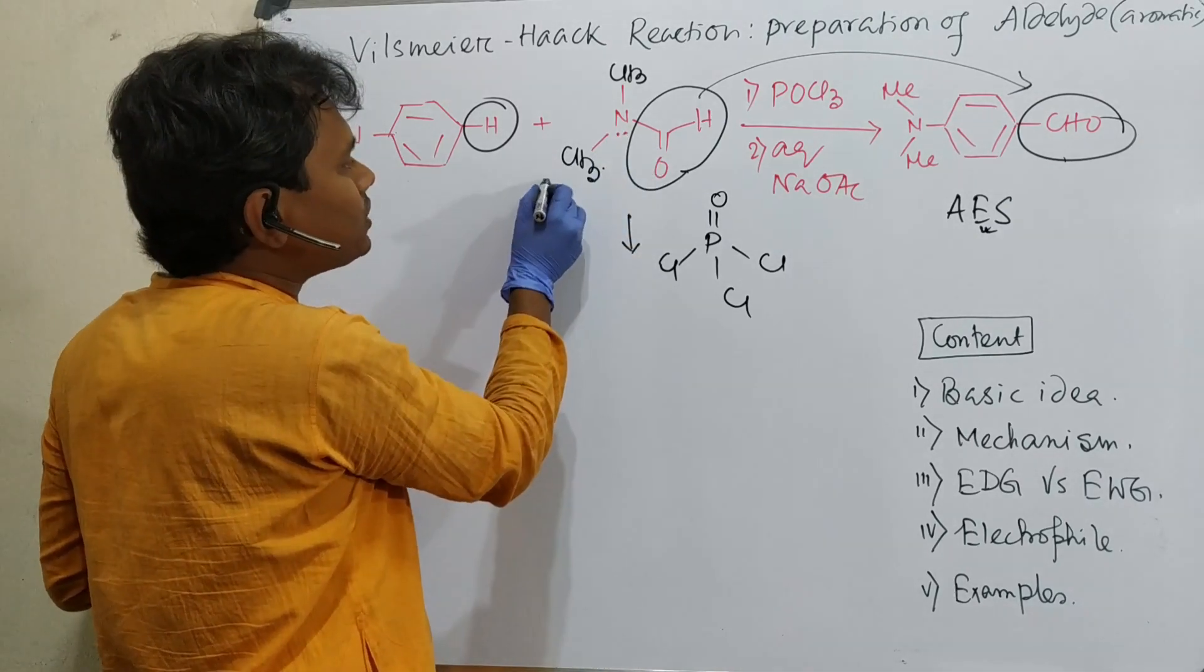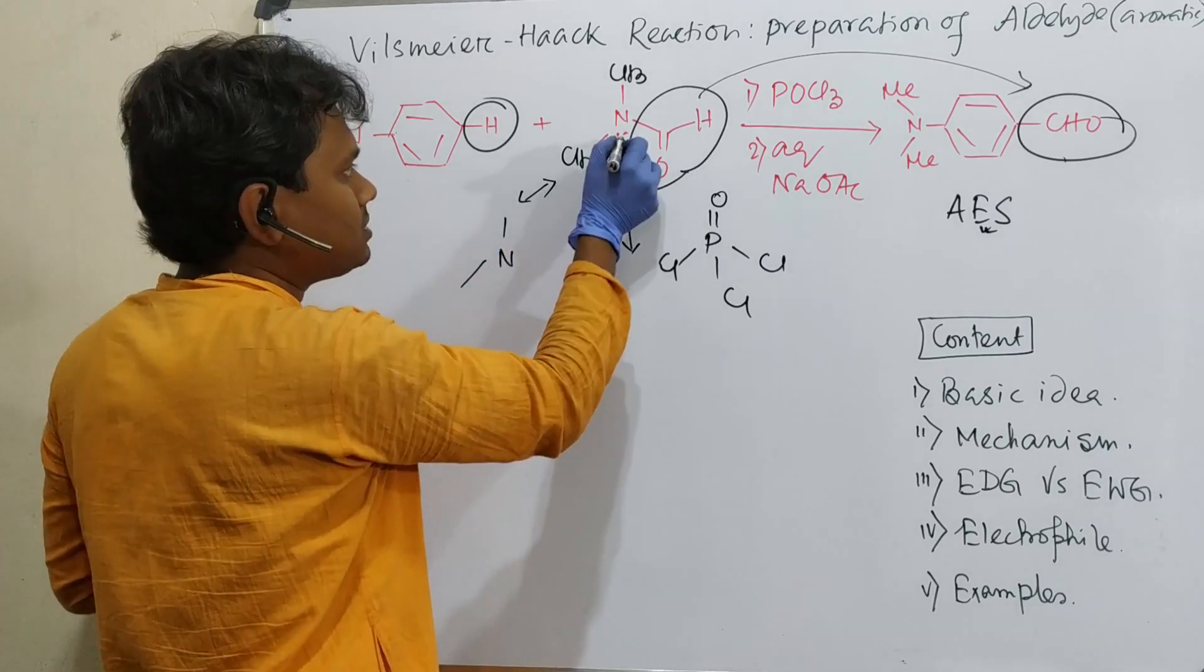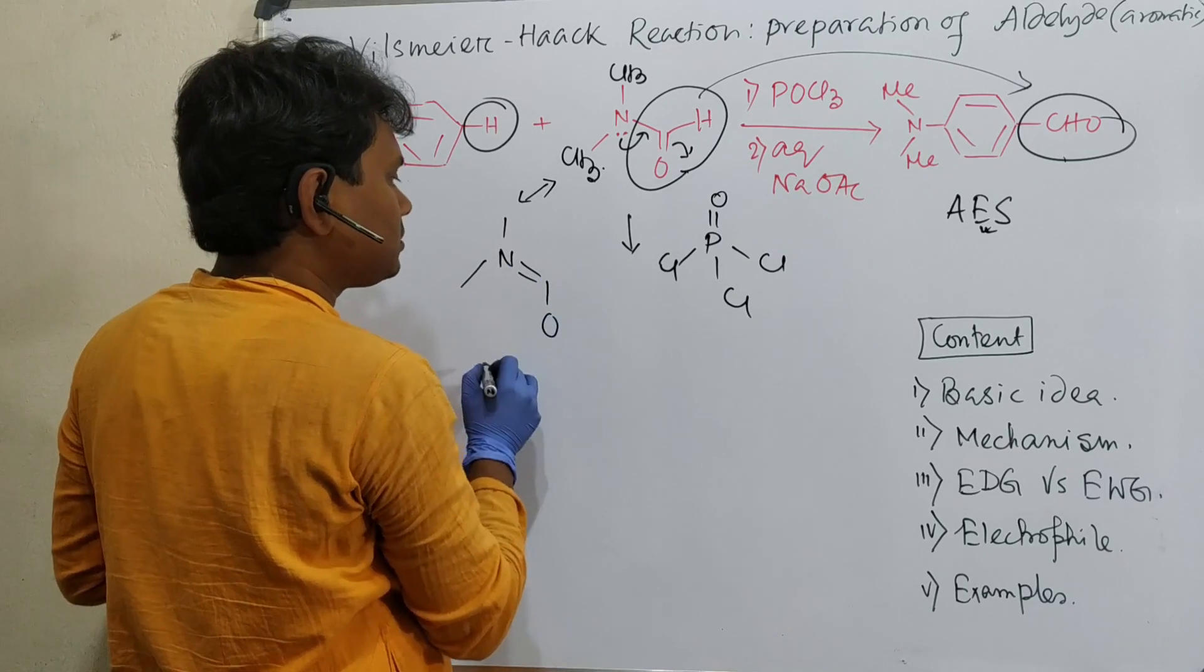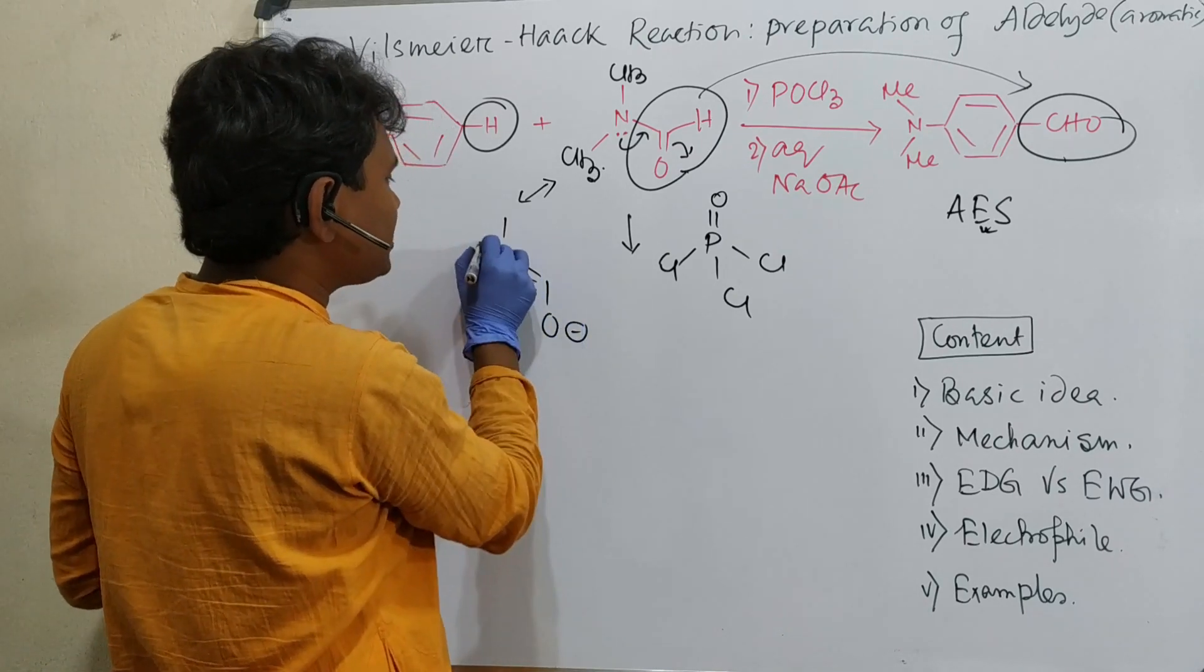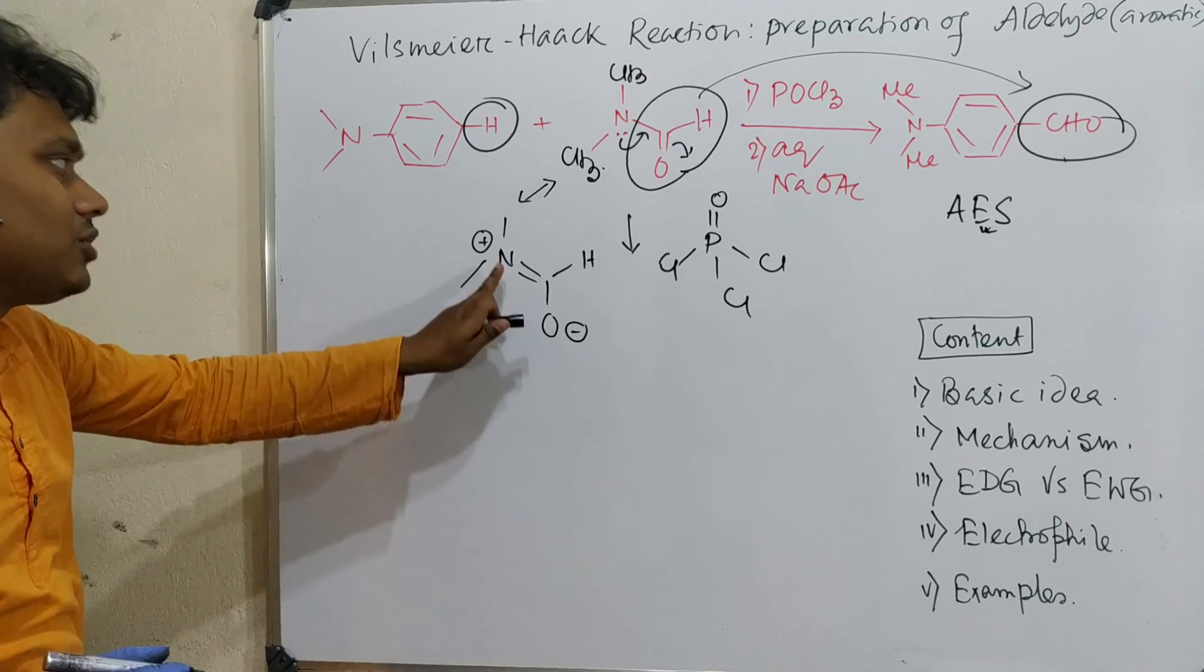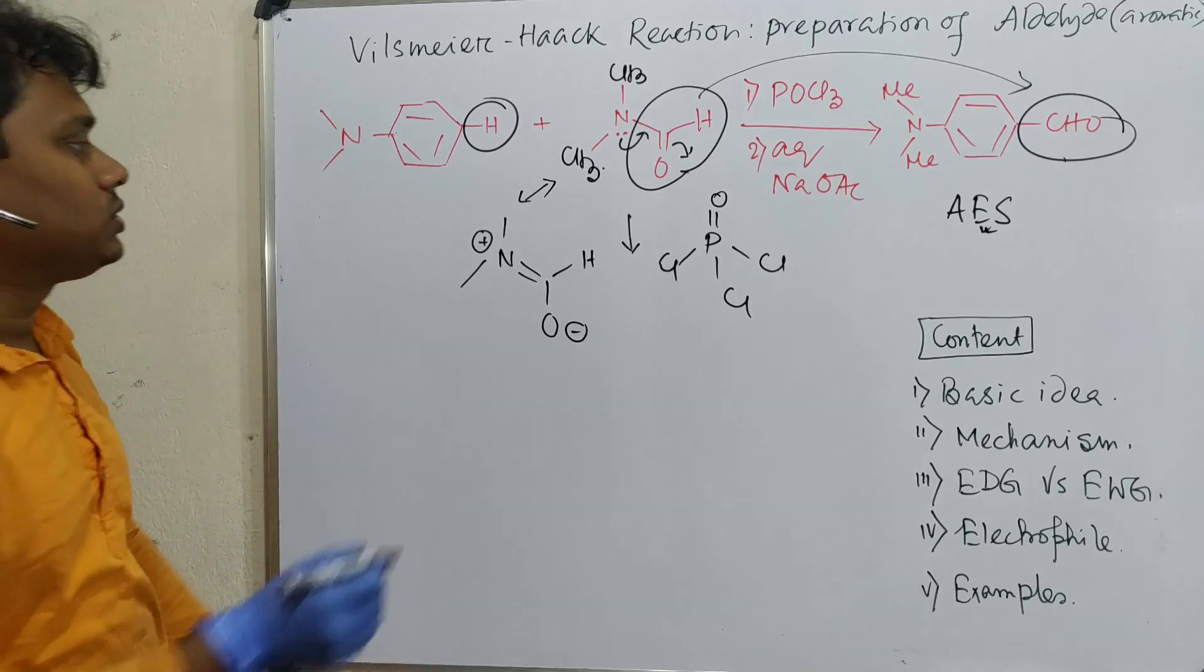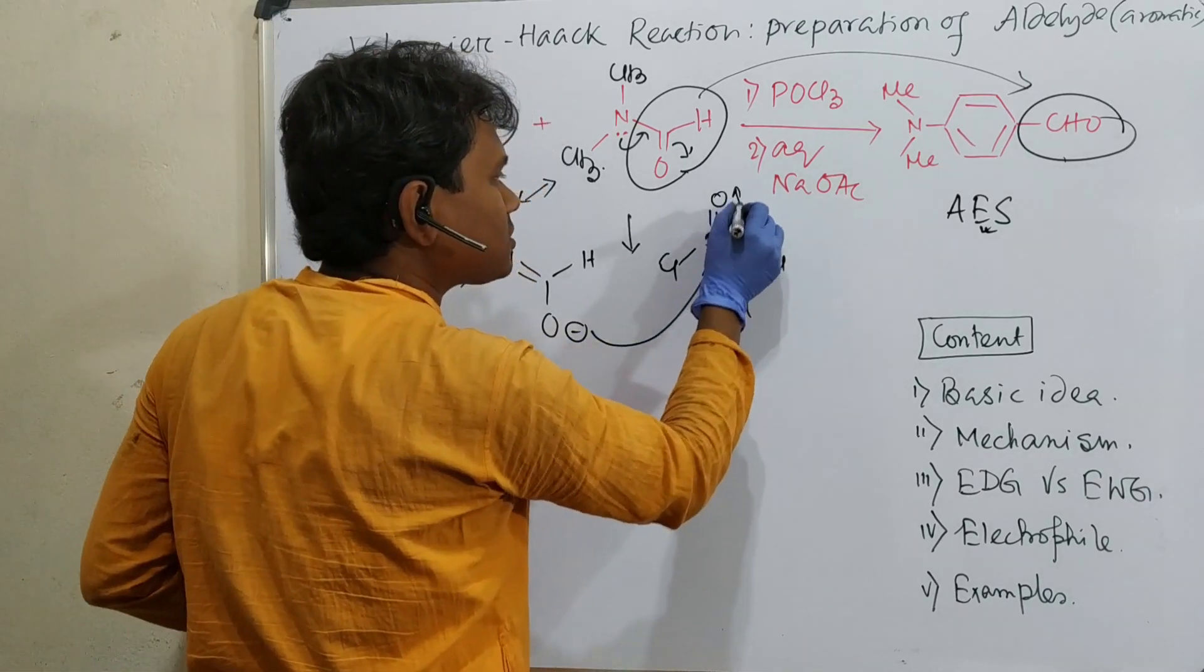DMF has a canonical form where this lone pair goes, creating O minus and nitrogen having plus charge. That's why nucleophilic attack happens through this oxygen, not nitrogen. Secondly, nitrogen is greatly bulky but oxygen is free. Consequently, oxygen attacks this phosphorus reagent.